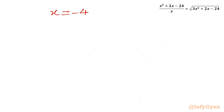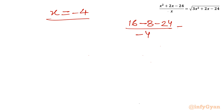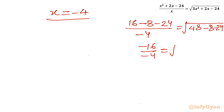Now check x = -4: left hand side = (16 - 8 - 24) / (-4) = -16 / -4 = 4. Right hand side = √(48 - 8 - 24) = √16 = 4. Left hand side is 4 and right hand side is 4. So only one real solution is accepted: x = -4.